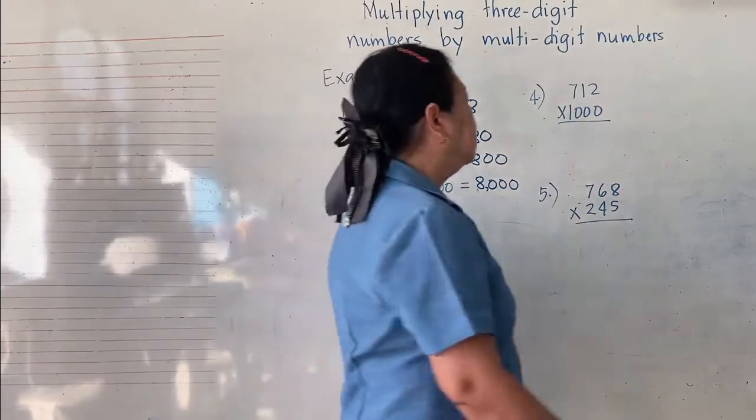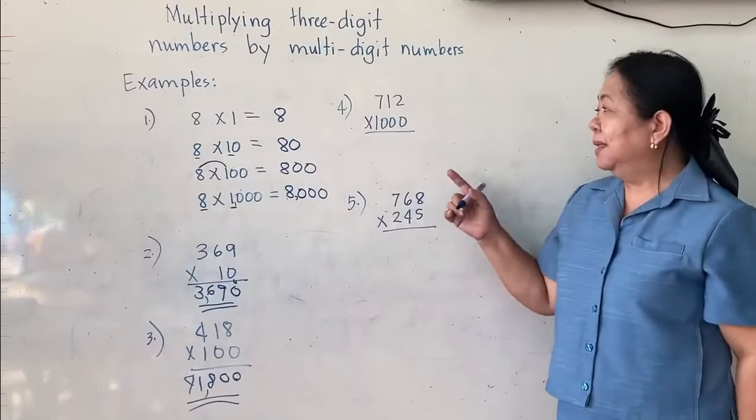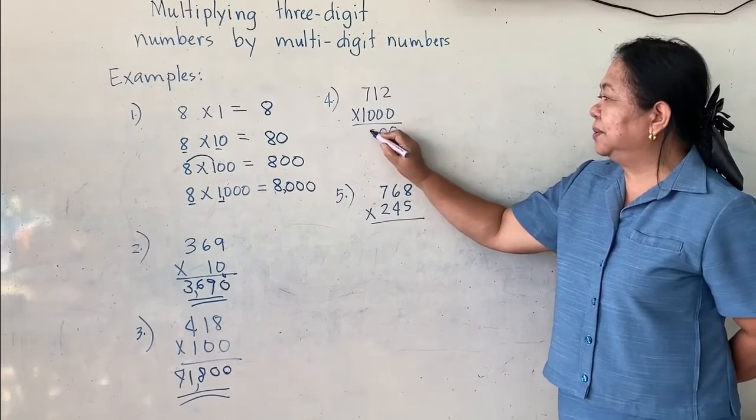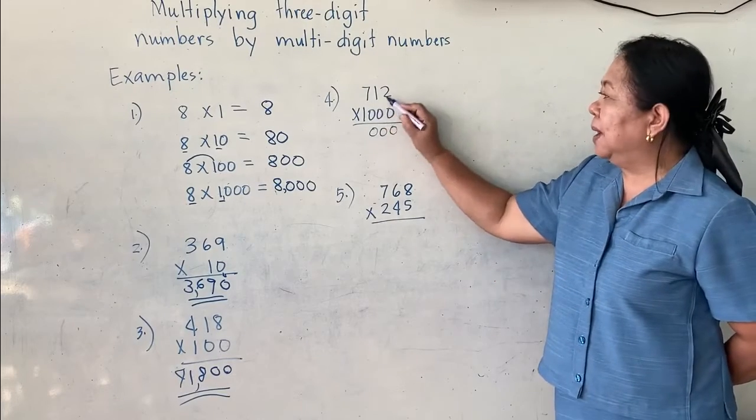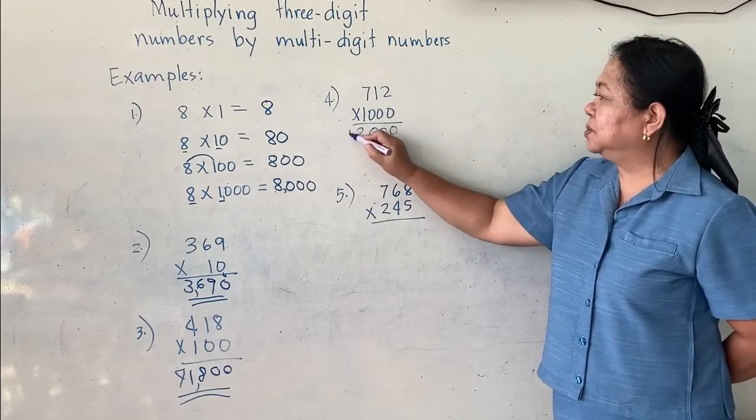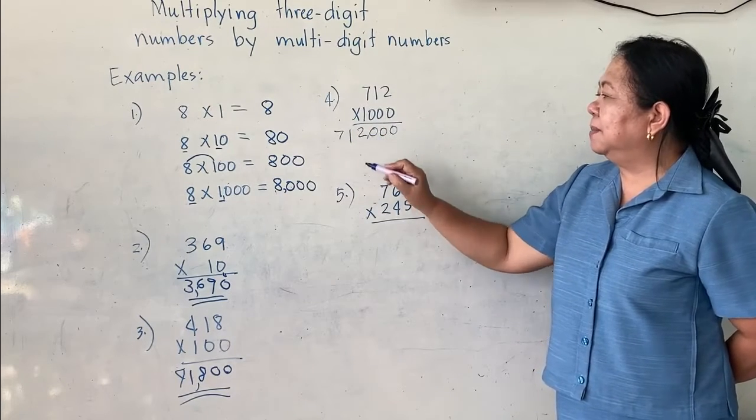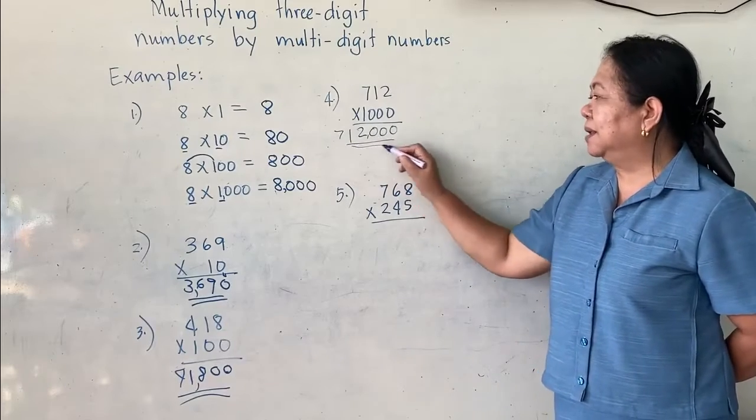Another one. Let's say we have 712 times 1,000. Here, we will bring down 3 zeros. This, this, and this. 3 zeros. And then, multiply 1 times 2 is 2, 1 times 1 is 1, and 1 times 7 is 7. Therefore, the answer is 712,000.